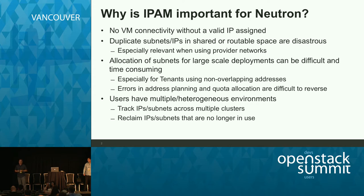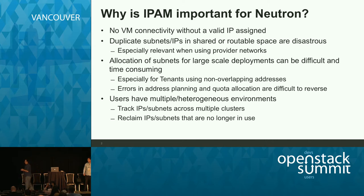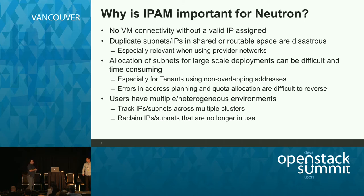You can imagine how painful it would be to have to re-IP hundreds, if not thousands, of VMs because you've run out of subnets and then have to completely change your IP space. In addition, as you start to scale clouds across multiple different platforms, being able to allocate subnets automatically for tenants is really something that a lot of users have been asking for.